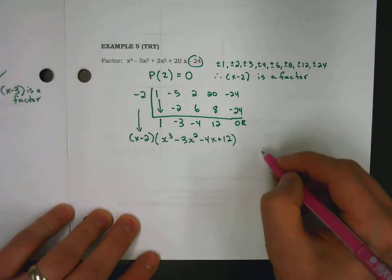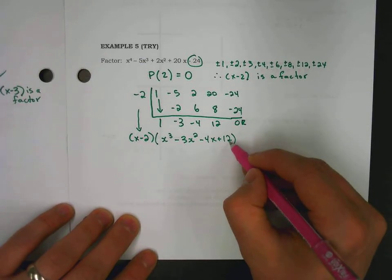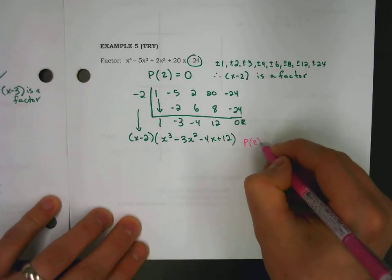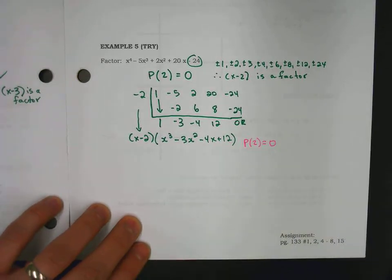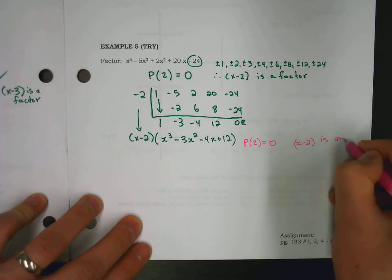Test factors of 12. Positive negative 1, 2, 3, 4, 6, 12. Lots of options. Again, I'll give us one that does work. So if you, in fact, use x equals 2, again, you get 0 that comes out. So, in fact, x minus 2 is another factor. There's actually two x minus 2 factors.